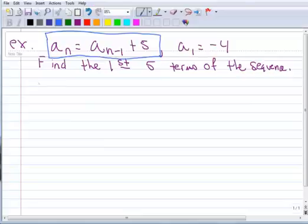This is a recursive sequence because I need to know the term before it to find the next term. We're given the first term, a sub 1 equals negative 4, and we want to find the first 5 terms.